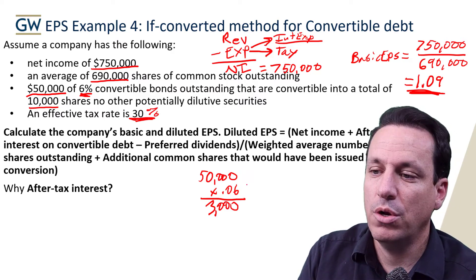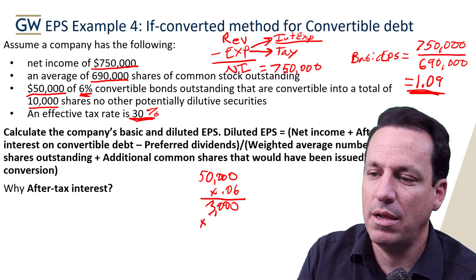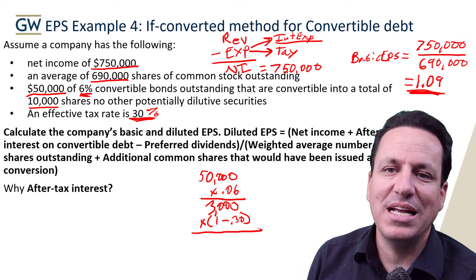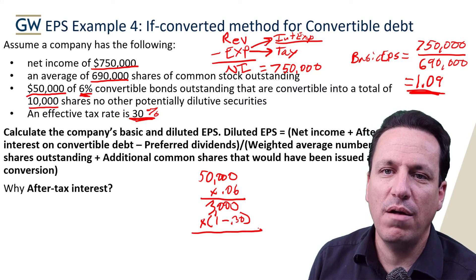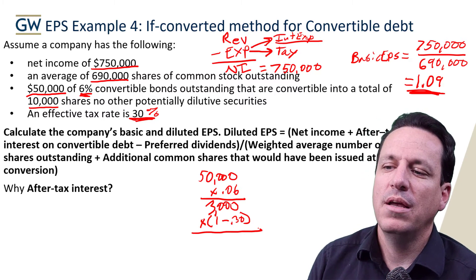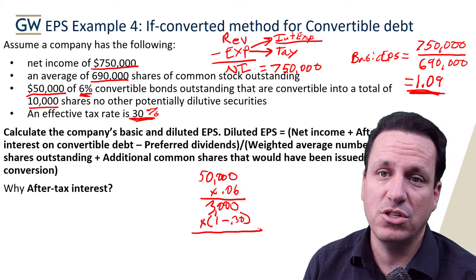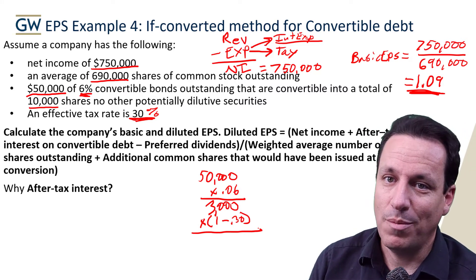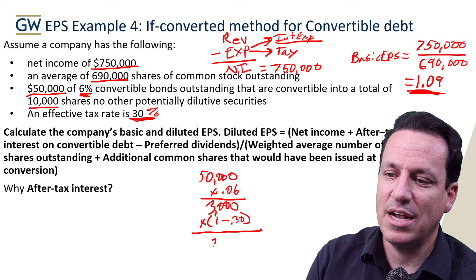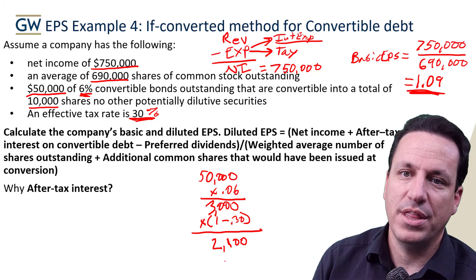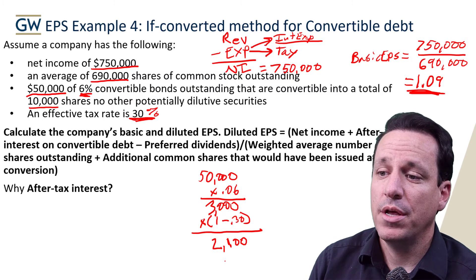They forget the 30% tax rate. What you have to do is take that $3,000 times one minus the tax rate. Why one minus the tax rate? Because that's the amount you get to keep. The tax man comes and gets your money, and you get to keep 70% of it. So the $3,000 you don't have to pay now becomes part of your income, but that $3,000 is not all yours — some of it's owed in taxes. So you do the after-tax effect, and the after-tax amount turns out to be $2,100, which makes sense because it's 70% of $3,000.